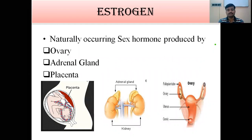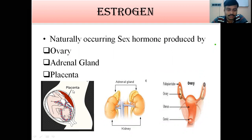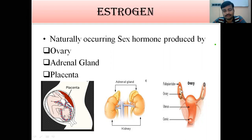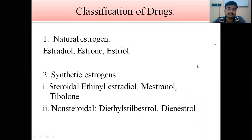Estrogen is a naturally occurring sex hormone which is produced by three particular parts: the ovary, adrenal gland, and placenta. The placenta is an extremely important part which gets attached to the fetus. Estrogen is also obtained from the adrenal gland, which is present just above the kidney, and from the ovary.